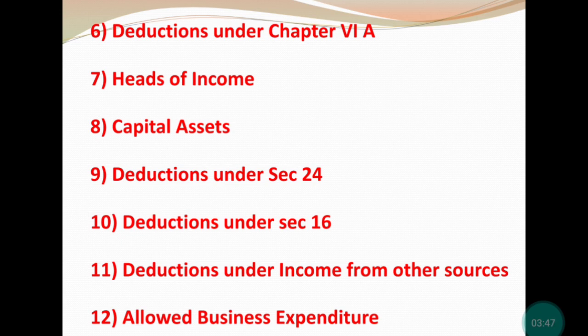Next is heads of income — there are total 5 heads of income। थोड़ा-थोड़ा description सबके बारे में लिखना है: salary के बारे में, house property के बारे में, business & profession के बारे में, other sources के बारे में, और capital gains के बारे में।